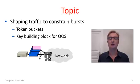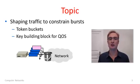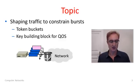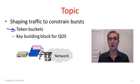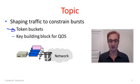It's particularly useful in quality of service because constraining traffic can help the network make good on any promises it makes. In this segment we're going to look at token buckets, a particular kind of traffic shaper which are widely used as a key building block for quality of service.